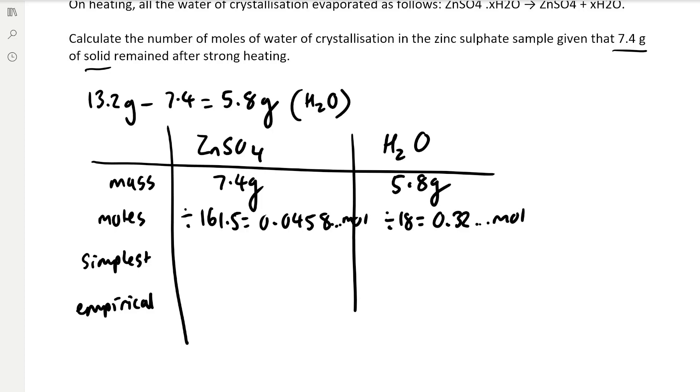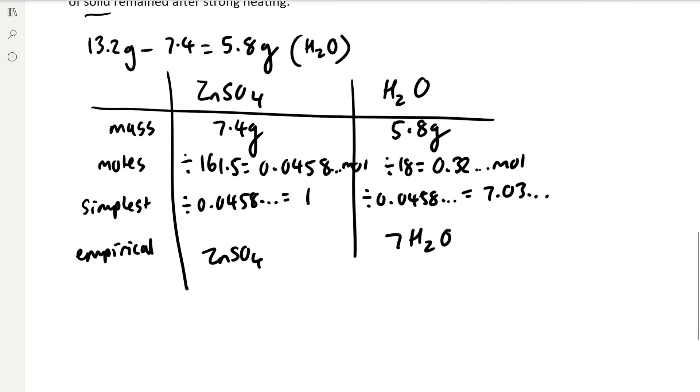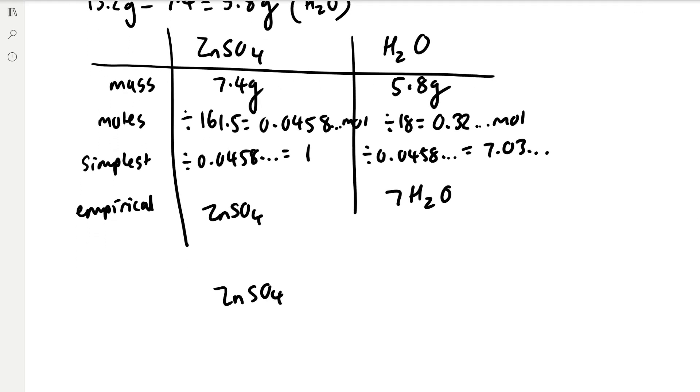Then we need to divide by the smallest number of moles, which is 0.0458. That gives us 1 for ZnSO4 and for H2O, 7.03. So our empirical formula is going to be ZnSO4 7 H2O, and X is equal to 7.